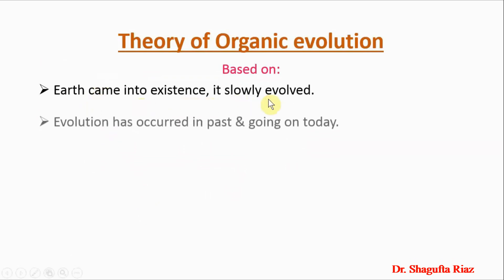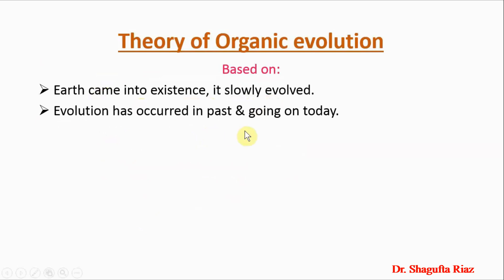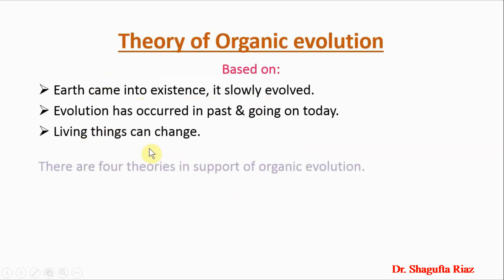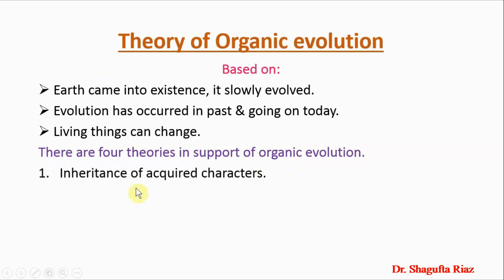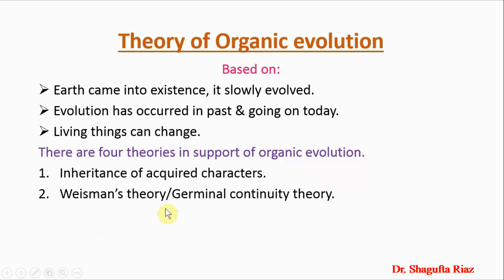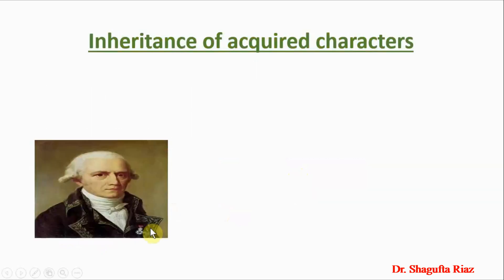These theories were all based on three points: the earth came into existence and slowly evolved; evolution has occurred in the past and is going on today; and living things can change. On the basis of these three points, four theories were put forward in support of organic evolution: (1) Inheritance of Acquired Characters, (2) Weismann's Theory or Germinal Continuity Theory, (3) Theory of Natural Selection, and (4) De Vries's Theory.